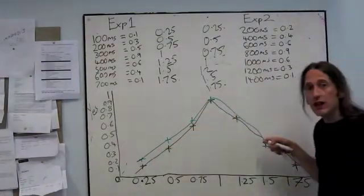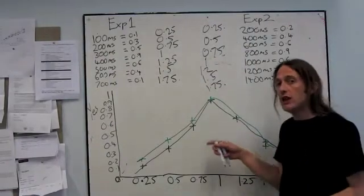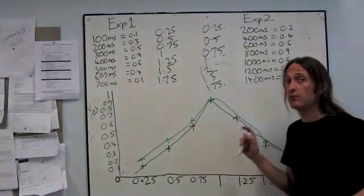They don't lie on top of each other exactly, but they don't deviate from each other systematically. That's the key test of superimposition.